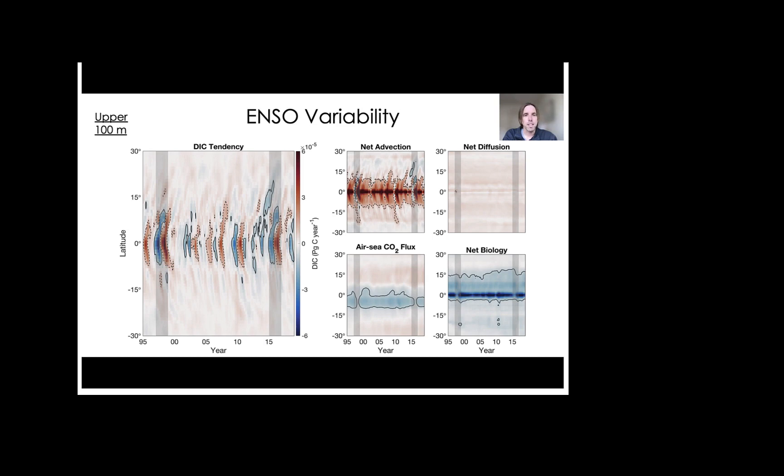Now in terms of the individual budget terms that comprise the DIC tendency, you can see that net advection is reduced. So the red colors transition to almost white or blue. And that is due to reduced upwelling near the equator. And also during the strong El Niños, such as 1997, you can see that this term actually becomes negative. So the circulation produces a loss of DIC. You can also see a corresponding decrease in the air-sea CO2 flux panel, which is below, and also in the net biology.